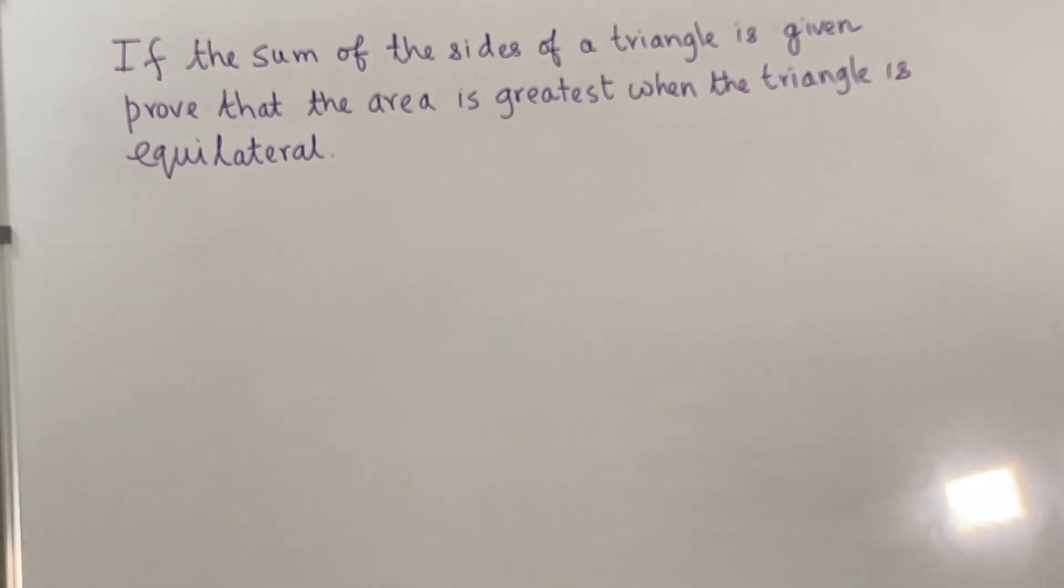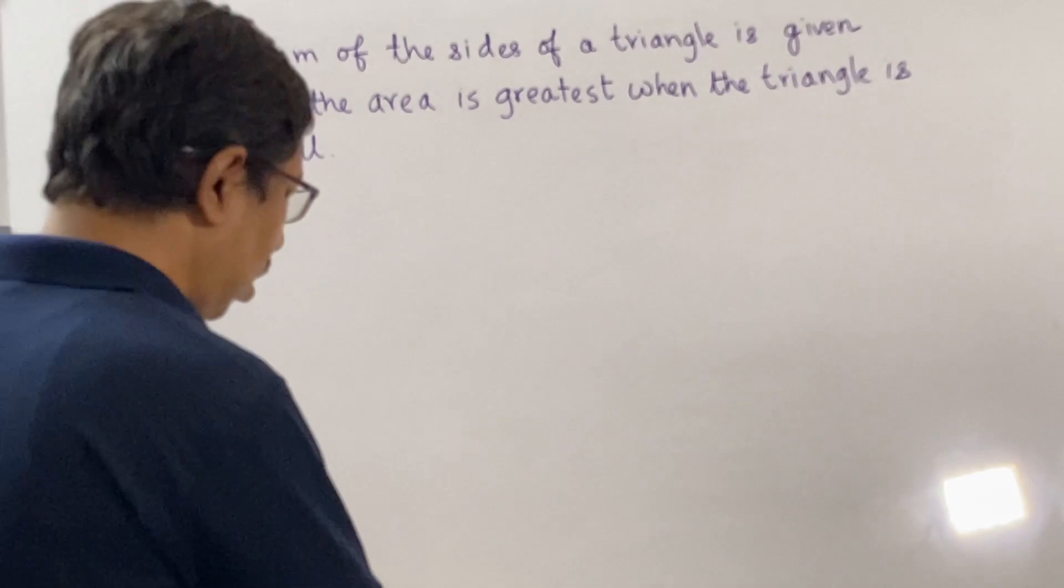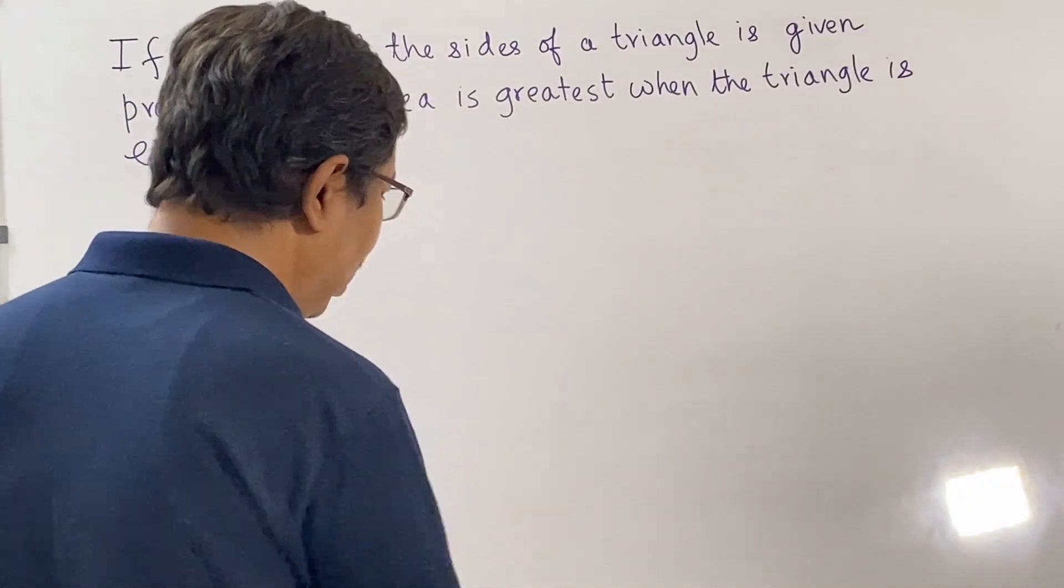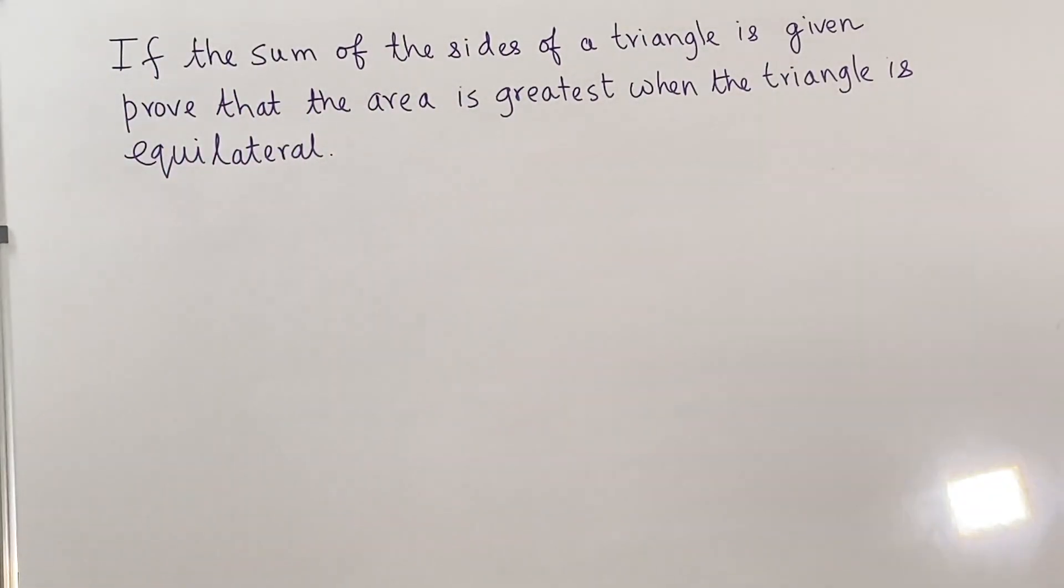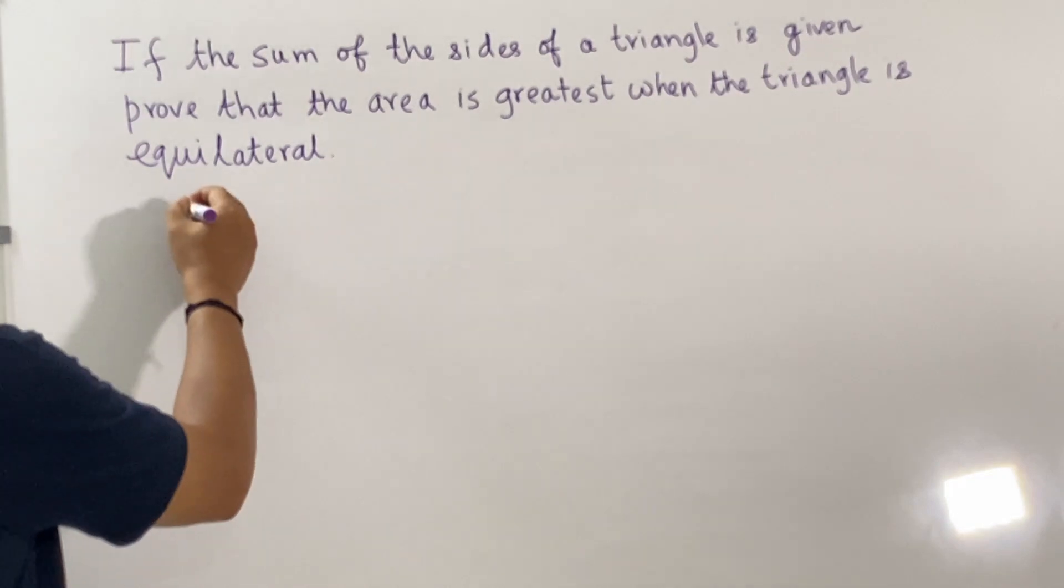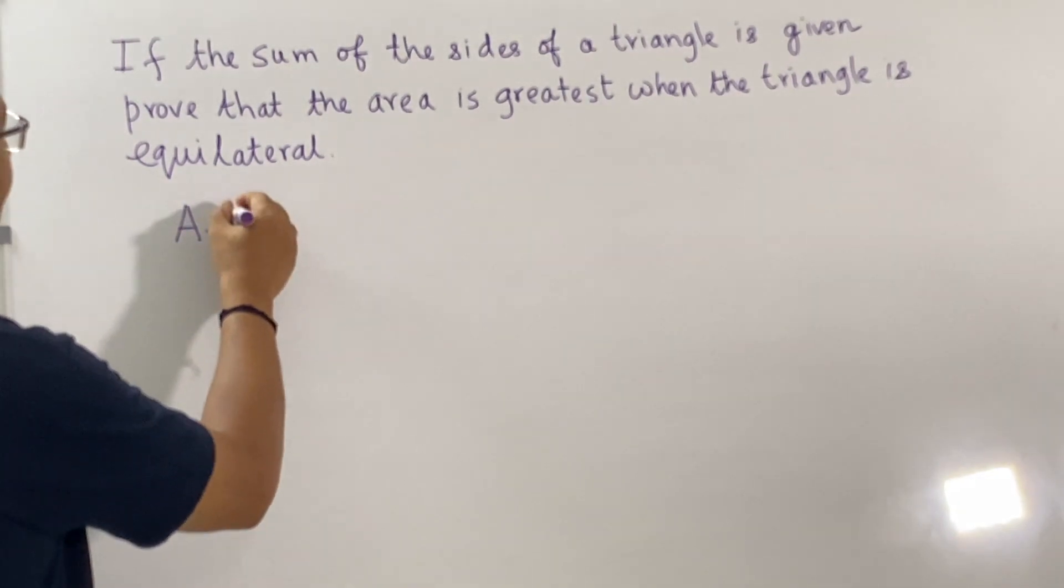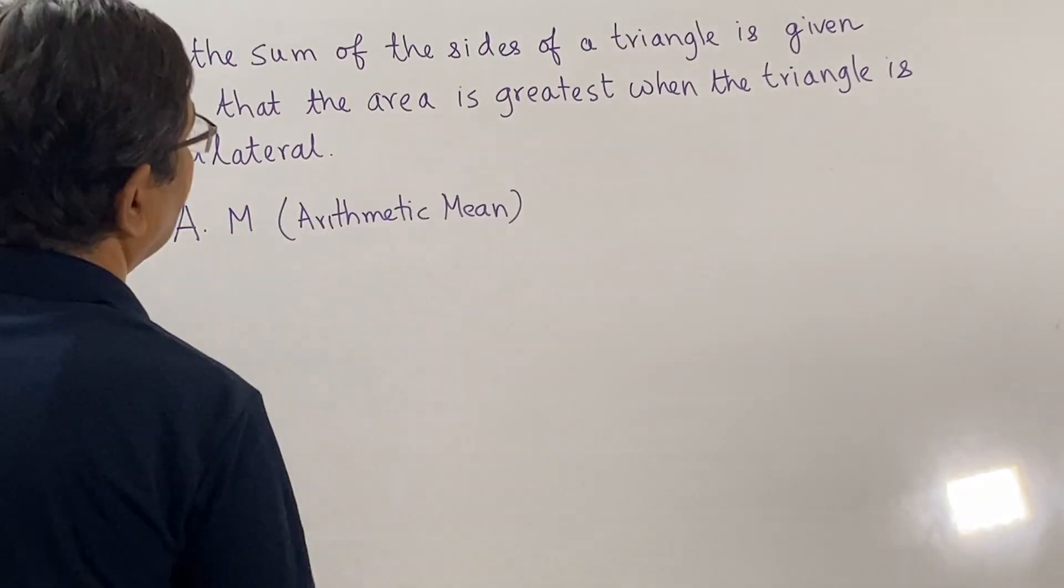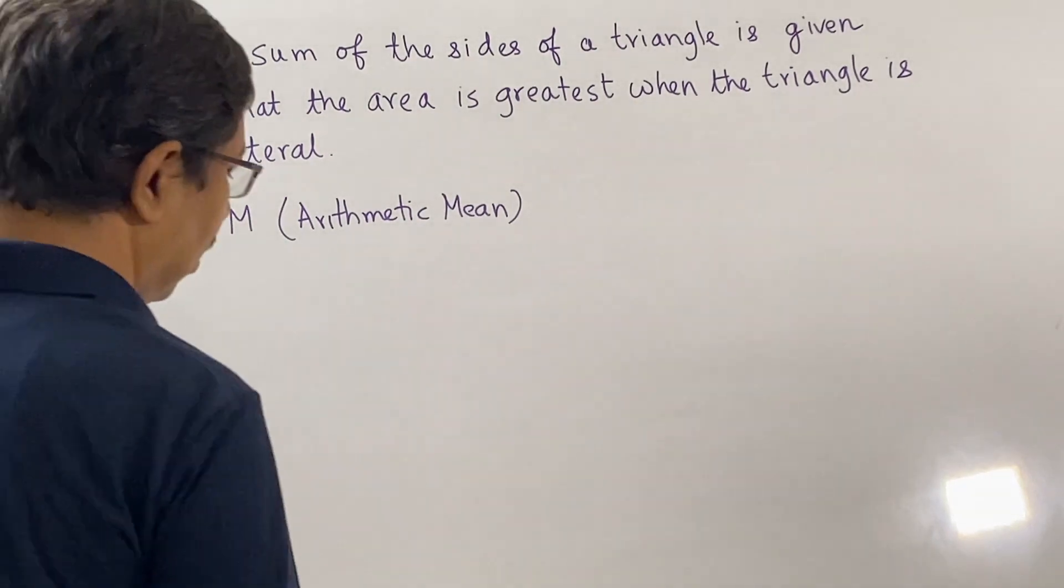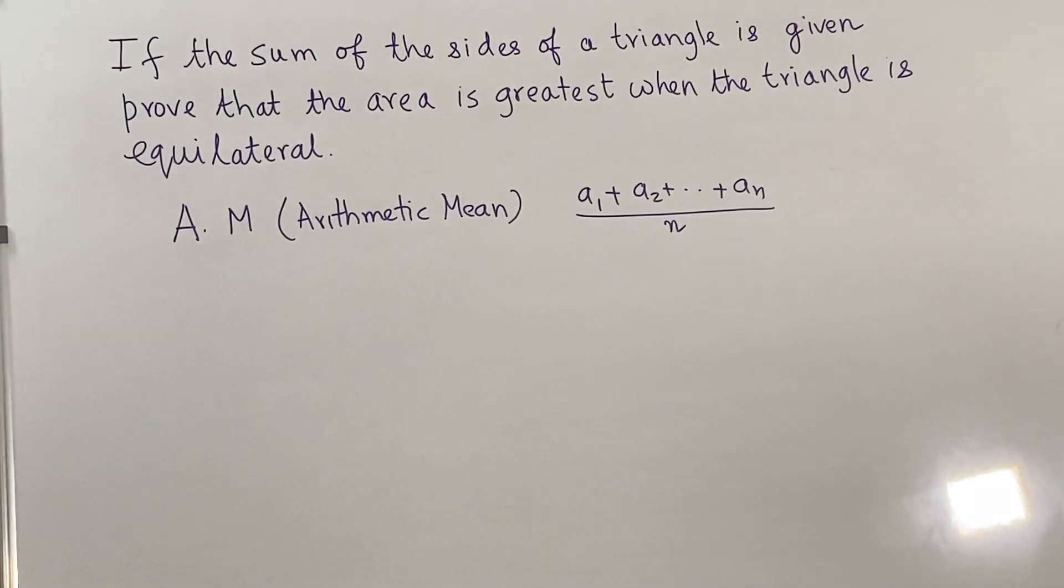So we will prove this using the very well-known AM-GM inequality. So let's first state what is the AM-GM inequality in this context. The AM or arithmetic mean is defined as the average of these numbers A1, A2, AN. So arithmetic mean is nothing but a simple average.